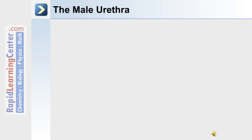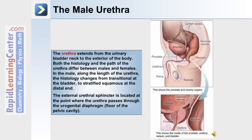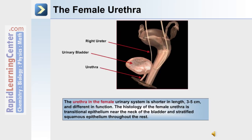The urethra extends from the urinary bladder neck to the exterior of the body, and both its histology and path differ between males and females. In the male, the histology changes from transitional epithelium at the bladder to stratified squamous epithelium at the distal end. The external urethral sphincter is located where the urethra passes through the urogenital diaphragm. The female urethra is shorter, between three and five centimeters, with transitional epithelium near the bladder neck and stratified squamous epithelium throughout its length.